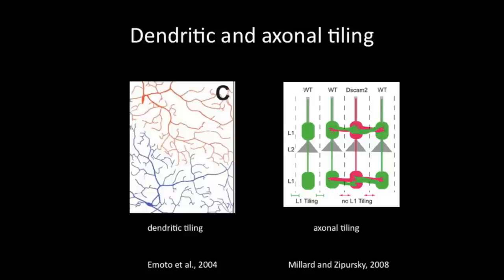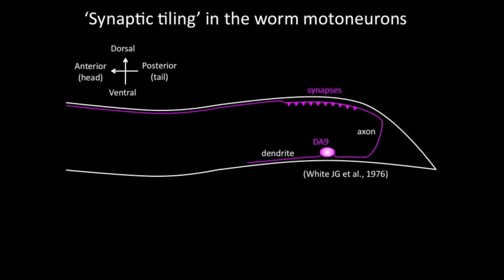Axon and dendrite tiling provide powerful ways to pattern connectivity by restricting the growth of neurites. A growing body of literature also points to the notion that the partnership and location of synaptic structures themselves are often precisely regulated. In this paper, we describe the regulation of subcellular synaptic localizations by the synaptic tiling rule. In nematode C. elegans, motor neurons form en passant synaptic connections. On the long axonal projections, synapses often form in a stereotyped small segment of the axon.